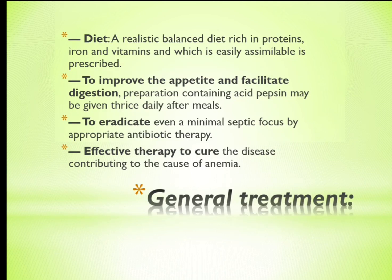General treatment — diet: a realistic balanced diet rich in proteins, iron, and vitamins which is easily assimilable is prescribed. To improve appetite and facilitate digestion, preparations containing acid pepsin may be given thrice daily after meals. To eradicate even a minimal septic focus, appropriate antibiotic therapy is used for effective treatment of conditions contributing to the cause of anemia.